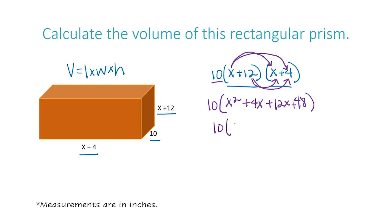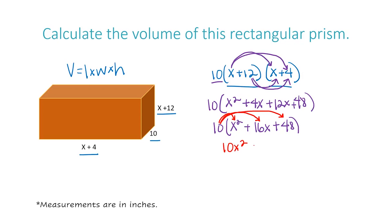Now I'm going to simplify everything inside my parentheses. I'll rewrite the 10, put my parentheses, and I have x squared — no other x squared terms, so I just rewrite that. Then I have 4x and 12x, which I add together to get 16x, plus 48. Now I can work with the 10 on the outside by distributing it to all three terms: 10 times x squared gives 10x squared, 10 times 16x gives 160x, and 10 times 48 gives 480.